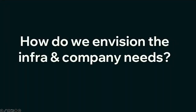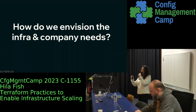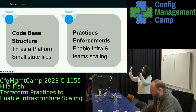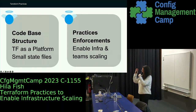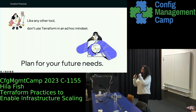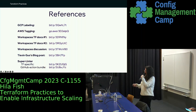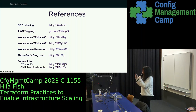Please think about how you envision the company's and infrastructure's needs — it will help you plan things accordingly. The holy grail here: think about your code structure to set up Terraform as a platform with small state files, and use practice enforcement to enable infrastructure and team scaling. Problems evolve and code changes — if you want to allow a project to be introduced to your environment, help that by planning ahead and utilizing Terraform in the best possible way. These are the references mentioned throughout the presentation, including the clean code article, and out-of-the-box checks you can incorporate into practice enforcement. Thank you so much.